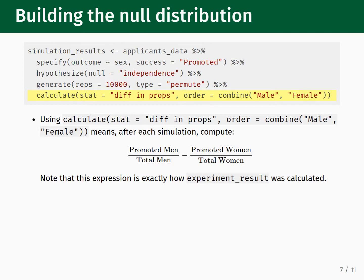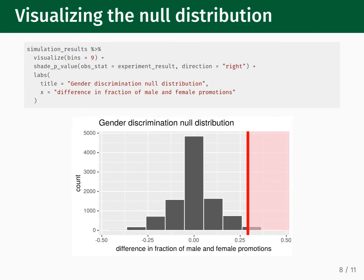It is important to be aware that it will take several seconds to run 10,000 simulations. You might think that RStudio froze, but unless there's an error, it's just that this is a more heavy-duty calculation. The infer package provides handy convenience functions for visualizing the null distribution and comparing it to the observed experimental result.